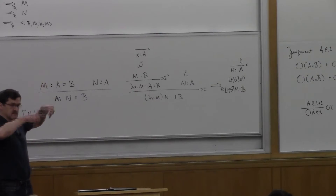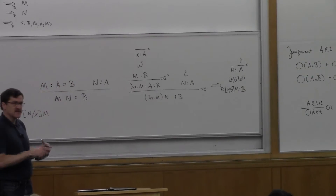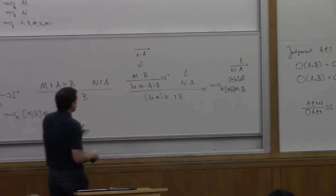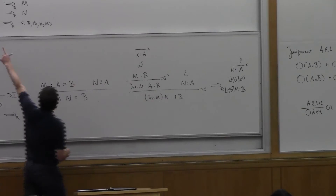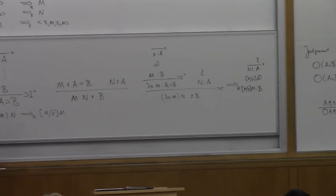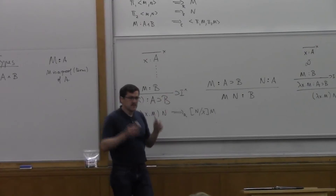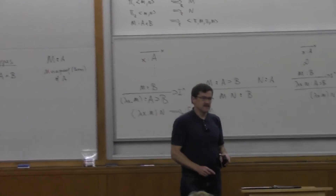A proof is like a two-dimensional figure, and a proof term is something written down — either a pair, a projection, a lambda abstraction, or an application. A proof term is a notation from which we should be able to reconstruct the two-dimensional derivation.